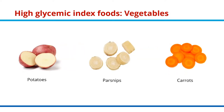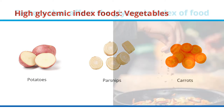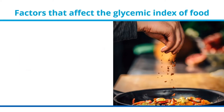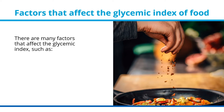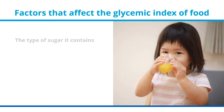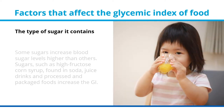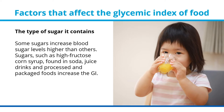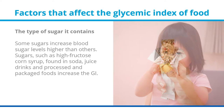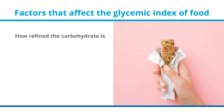There are many factors that affect the glycemic index of food. One factor is the type of sugar it contains — some sugars raise blood sugar levels higher than others. Sugars such as high fructose corn syrup, found in soda, juice drinks, and processed and packaged foods, increase the GI.